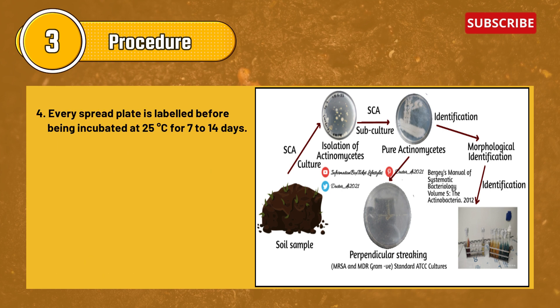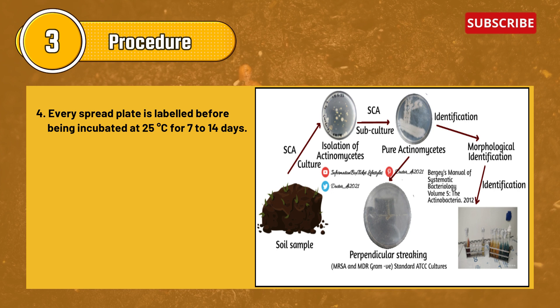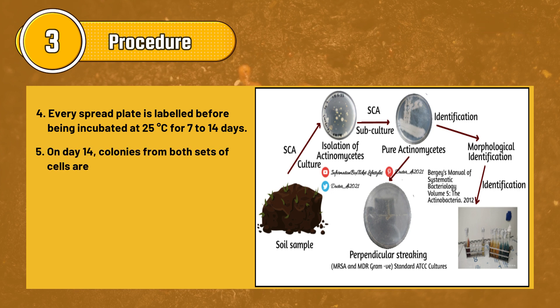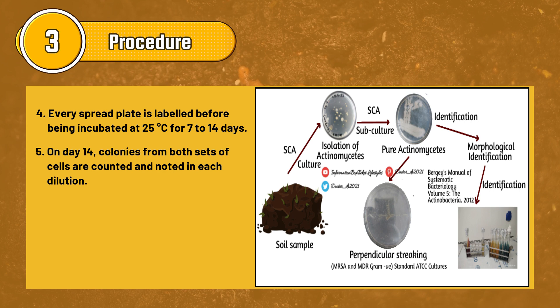Every spread plate is labeled before being incubated at 25°C for 7 to 14 days. On day 14, colonies from both sets of plates are collected and counted for each dilution.